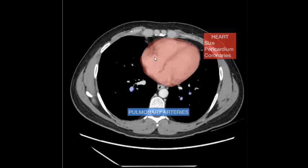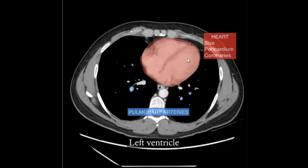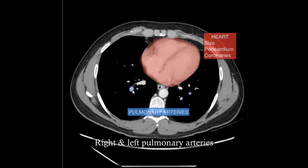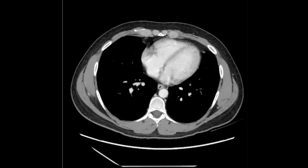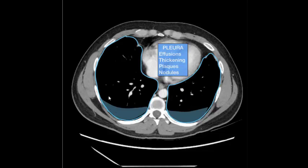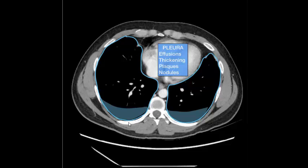Right atrium, left atrium, right ventricle, left ventricle, interventricular septum, right and left pulmonary arteries, right and left lung, bilateral pleural effusion.